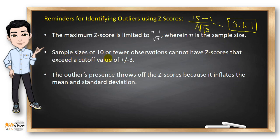But, if your sample size is 10 or fewer, it cannot have z-scores that exceed a cutoff value of positive or negative 3. So, we cannot use this z-score for identifying outliers if you have 10 samples and below.